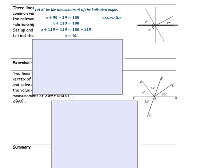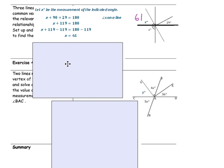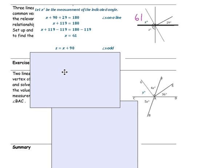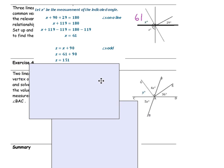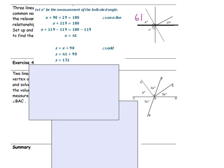So we have 61 degrees for the value of x, and we also need to find the value of z. We know that z is equal to x plus 90 degrees, as indicated by the right angle mark in the corner. So 90 degrees plus x equals z. That gives us 61 degrees plus 90 degrees, which is 151 degrees. So angle z equals 151 degrees — that's 90 degrees here and 61 degrees here, and the sum of those two together is angle z.